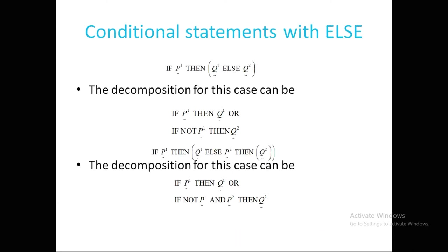For conditional statements with else, the rule 'if P1 then Q1 else Q2' can be decomposed as: (if P1 then Q1) OR (if NOT P1 then Q2). For a second example, 'if P1 then Q1 else Q2' decomposes to: (if P1 then Q1) OR (if NOT P1 AND NOT P2 then Q2). In this way we can decompose compound statements into canonical forms.